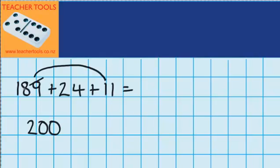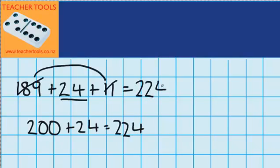So I can cross those numbers out which means I've just got 24 more left to add. 200 plus 24 equals 224, which means I must have delivered 224 flyers.